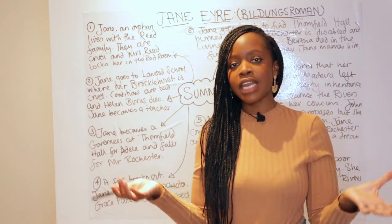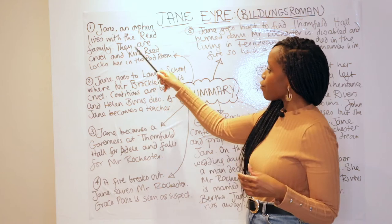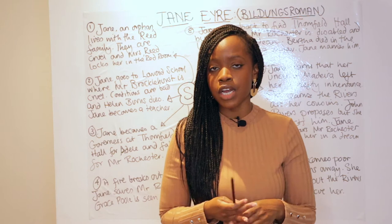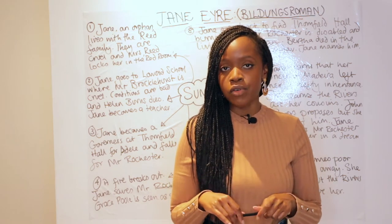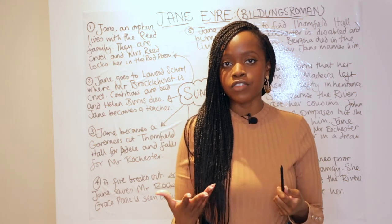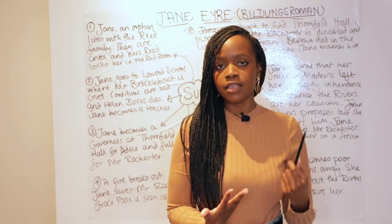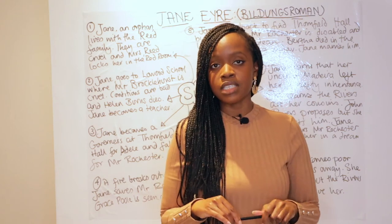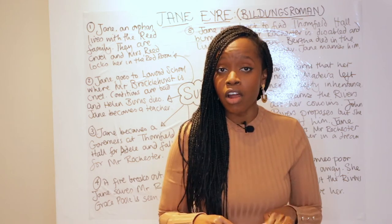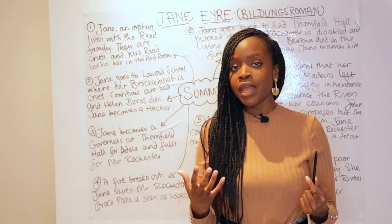The story begins with Jane, our main protagonist, who is an orphan living with the Reed family. The Reed family is particularly cruel to her. Mrs. Reed is a widow whose husband, before dying, asked her to treat Jane like a daughter. However, she treats Jane almost like a servant. John Reed, her son, is especially cruel to Jane, as are the other two daughters, Eliza and Georgiana.